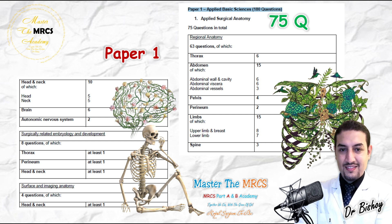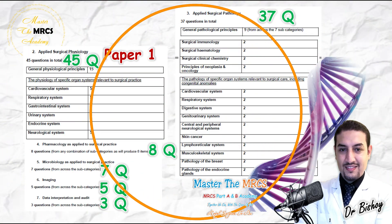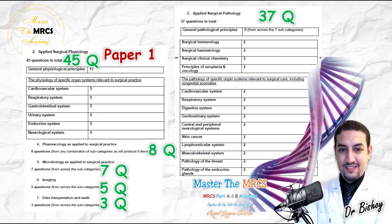The abdomen also covers the urological supply and overlaps with the GIT and colon. For the thorax, there is at least one question; for the head and neck, there is at least one question — so it's not a big deal. Don't create your own monster. That covers the 75 anatomy questions of Paper 1. Now, Paper 1 also has 45 questions about applied surgical physiology.